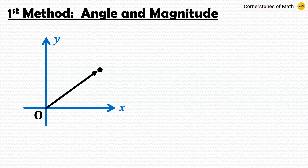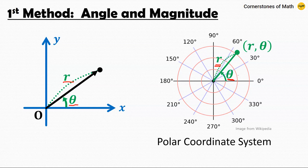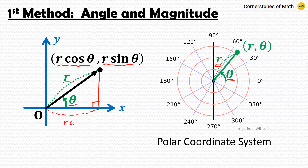The first method is what I call the angle and magnitude method. Every vector or point on a plane can be defined using two parameters: the magnitude of vector r, which is equal to the distance to the point from the origin, and the angle theta between the vector and the positive direction of the x-axis. There exists an entire coordinate system — the polar coordinate system — where we express the point in terms of radius r and angle theta. In Cartesian coordinates, this point is given as r cosine theta, r sine theta.